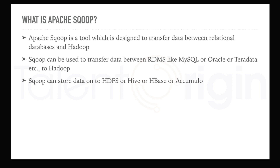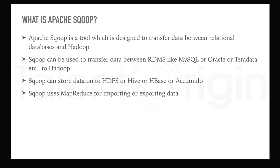Sqoop can store data from RDBMS onto Hadoop — into HDFS, Hive, HBase, or even Accumulo. The source for Sqoop can not only be a relational database management system; it can also extract or import data into Hadoop from a mainframe system. Input for Sqoop can be either an RDBMS table or a mainframe dataset. Whenever we use Sqoop, it runs a MapReduce job in the background for importing or exporting data between RDBMS and Hadoop.